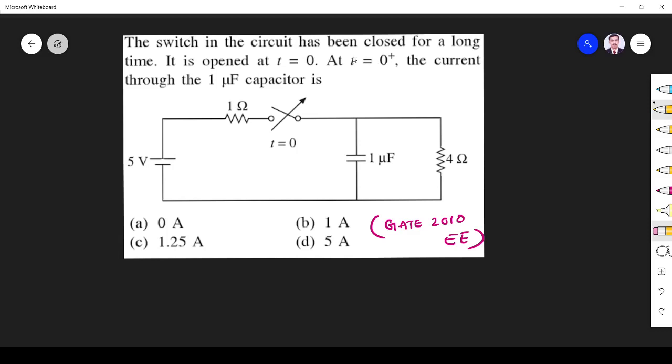The switch in the circuit has been closed for a long time. It is opened at t = 0. At t = 0+, what is the current through the 1 microfarad capacitor? This is what the question asks.